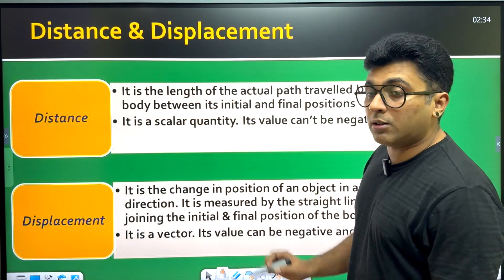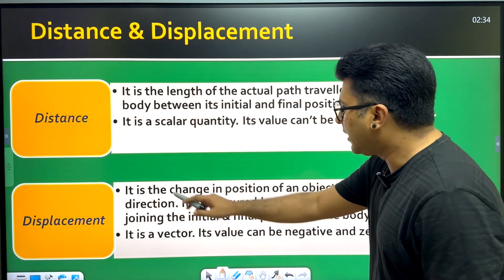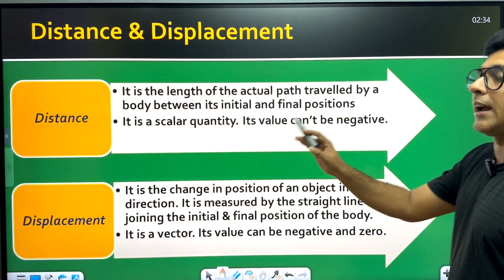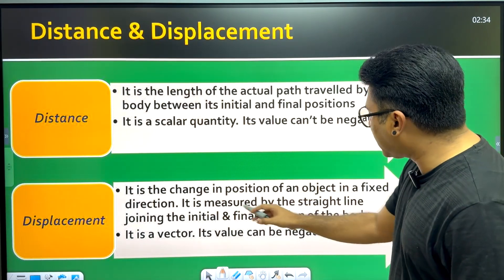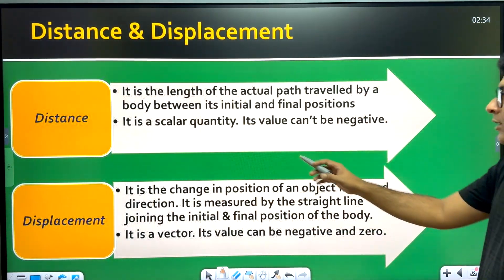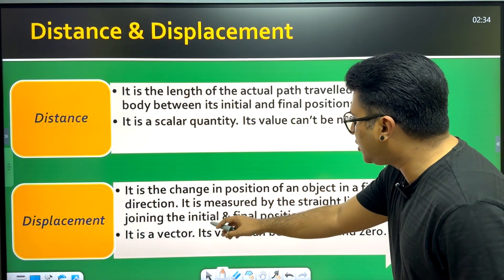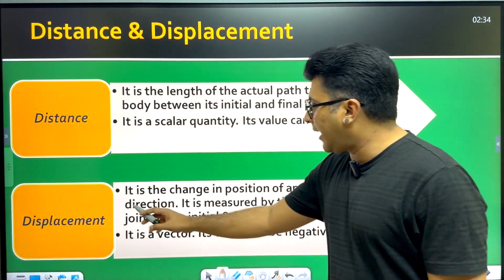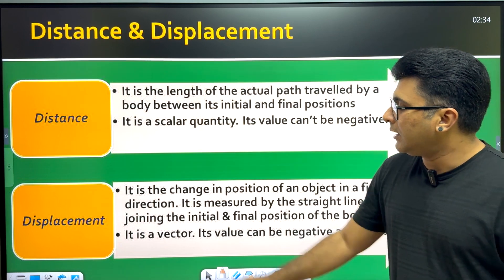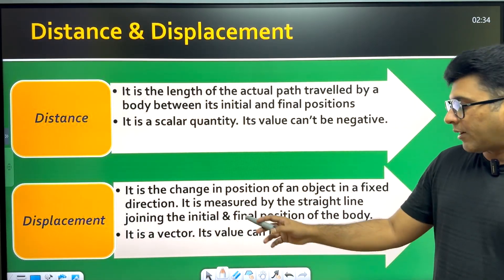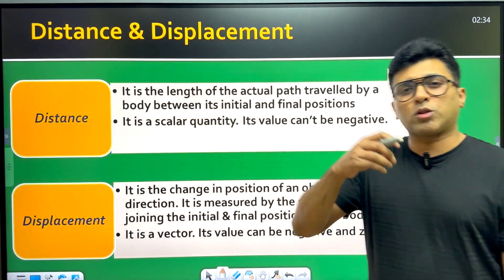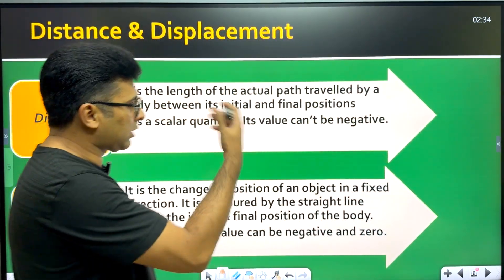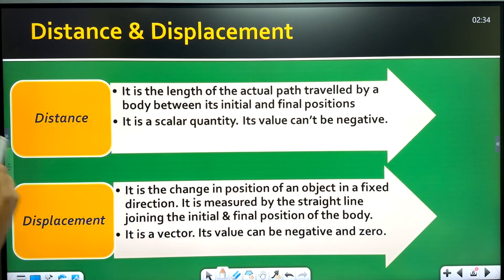Next, displacement. Displacement is the change in position of an object in a fixed direction. It is measured by the straight line joining the initial and final position of the body. Displacement is a vector quantity, so it can be positive, negative, or zero.